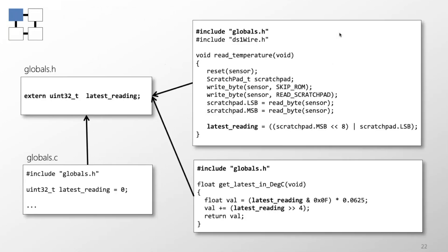Here's a concrete code example: a readTemperature function in one module and a getLatestInDegreeCentigrade in another, both sharing a global variable. The readTemperature module can change the state of the other module without its knowledge. In sequential code this is bad; in multi-threaded code it can be devastating, where two modules running in separate threads can change a global variable simultaneously — what we call a data race condition.